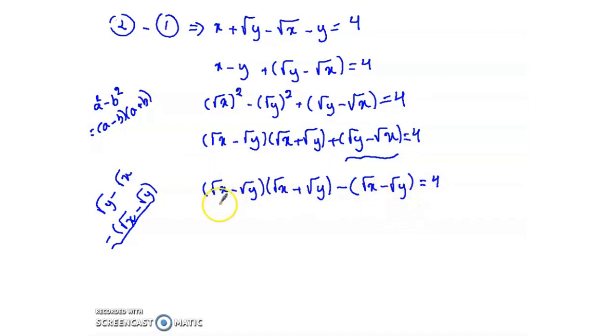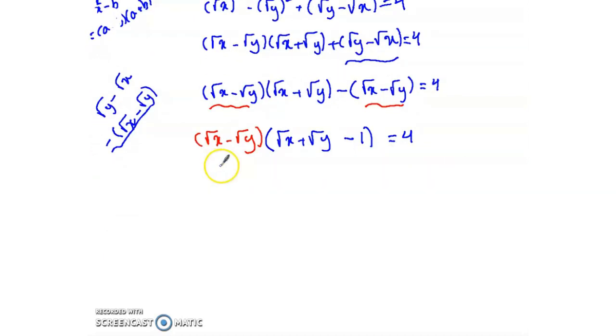Now we have a common factor, which is radical x minus radical y. Radical x plus radical y minus 1, whose product is equal to 4. So what are the numbers or integers whose product is equal to 4?